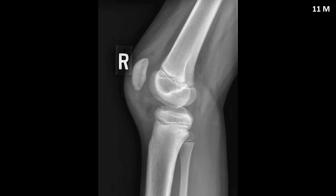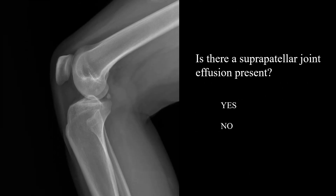Another helpful sign of a joint effusion is anterior displacement of the patella, which is only seen in very large joint effusions like this one. Now let's try a couple of examples — is there a suprapatellar joint effusion present?